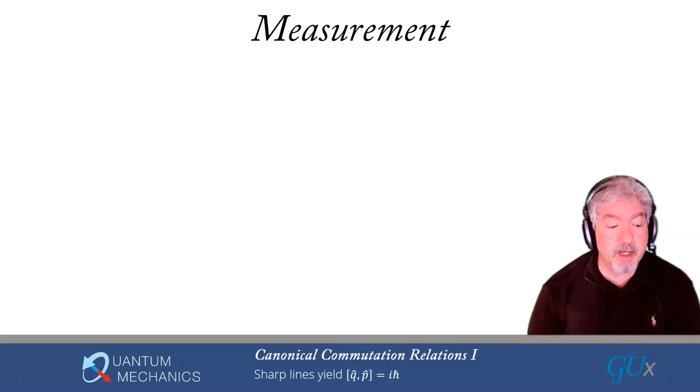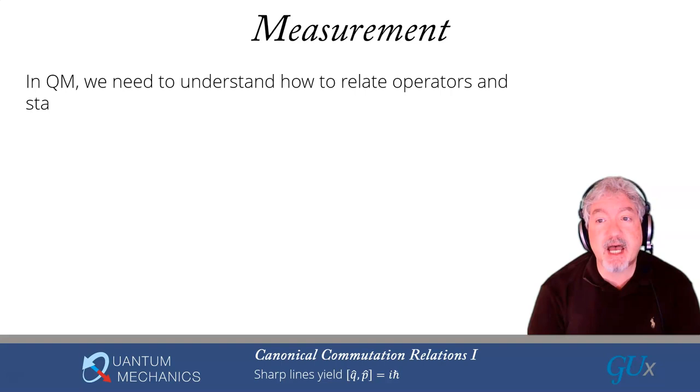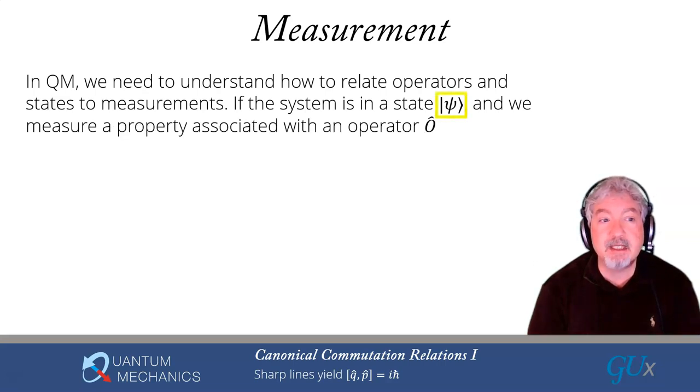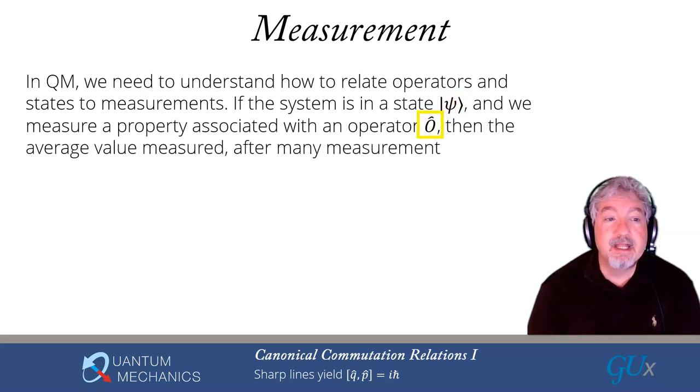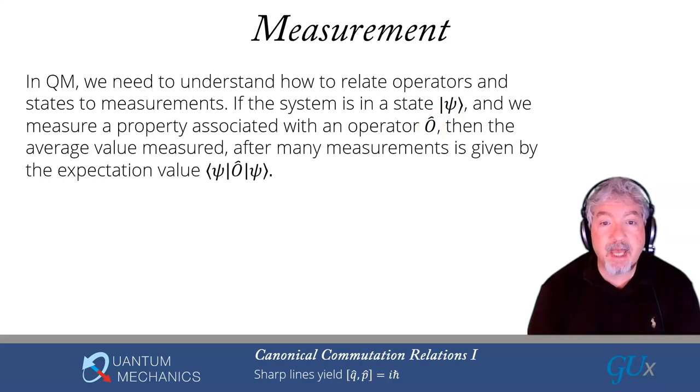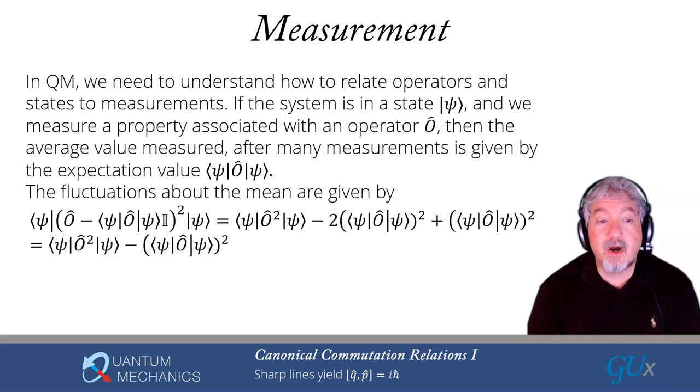Before we go too far, we want to talk a little bit more about how measurement works. So in quantum mechanics, we have to understand how we relate these operators and the states that we are putting operators into to the measurements. So what we say is that if the system is in a state psi and we measure a property associated with an operator O hat, then the average value measured of that operator O hat, after we make many, many measurements, is given by the expectation value of psi O hat psi. I want you to think about that for a moment. Psi is a vector in my space. I act on it with O hat. That gives me another vector in the space. And then I take the overlap with the original state psi with a bra. And that ends up giving me what the average value of all of the values for the measurement of the operator O hat will be after I repeat the measurement many, many times. This is not something that can be derived. This is essentially a postulate of quantum mechanics.